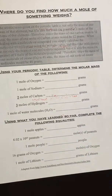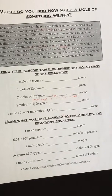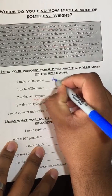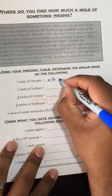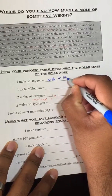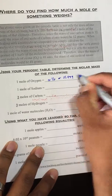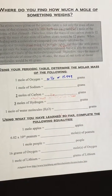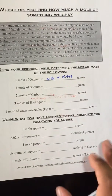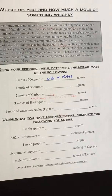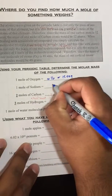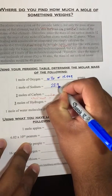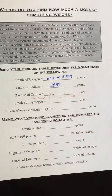One mole of oxygen — we look at the periodic table. How many grams? We can approximate it to sixteen, or we can say 15.999. Either one. Now, say we have one mole of sodium. How many grams of sodium? We look at the periodic table.